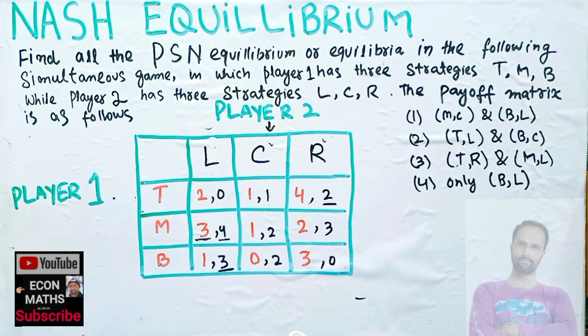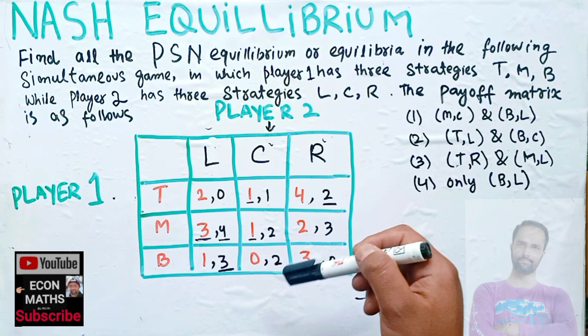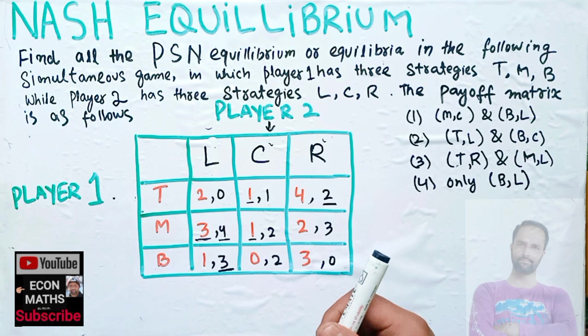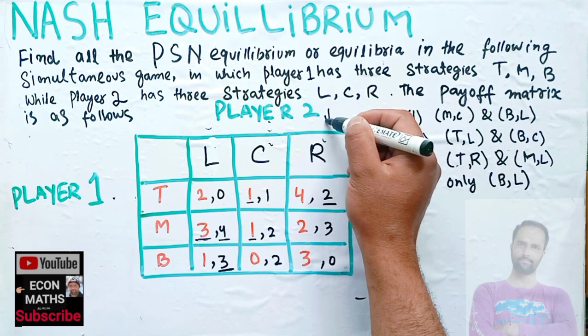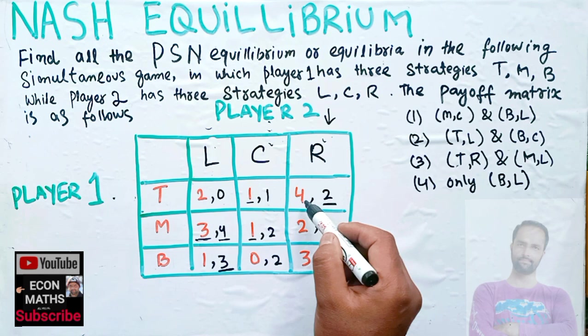If player two plays C, player one's options are T, M, or B with payoffs 1, 1, and 0. Since 1 and 1 are tied as the highest, we underline both. Now if player two chooses R, player one's payoffs are 4, 2, and 3. Player one will choose 4 as it gives the highest payoff, so we underline that.